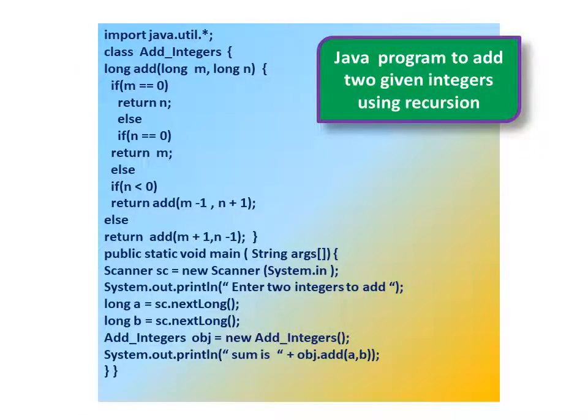Java program to add two given integers using recursion. Import java.util.*. Class AddIntegers. long add(long m, long n): if m is equal to 0, return n. Else if n is equal to 0, return m. Else if n less than 0, return add(m - 1, n + 1). Else return add(m + 1, n - 1).